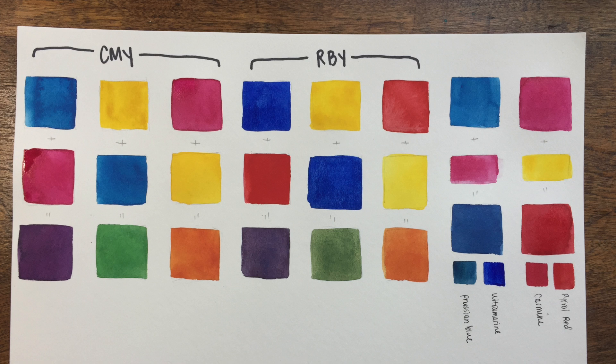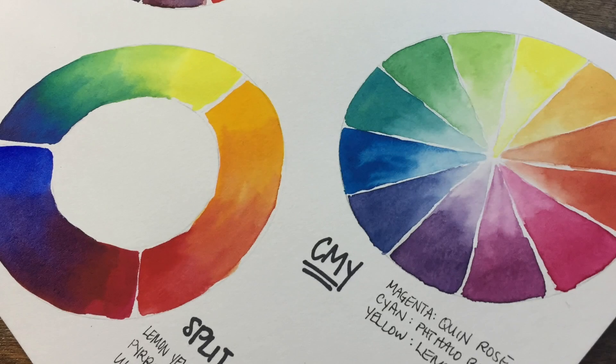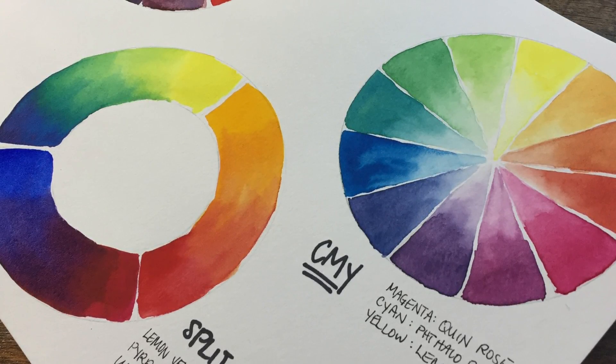You can mix this middle of the road yellow. I do find personally that if I only have one yellow, I want it to be in the middle because I have more versatility. But if you're going to split it into two, I would go warm and cool.